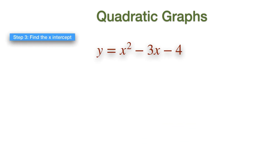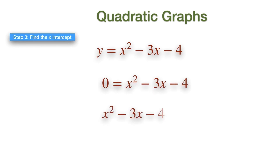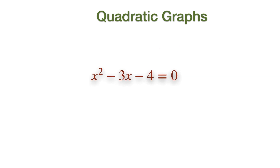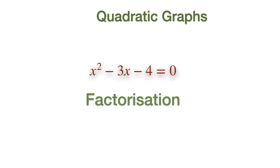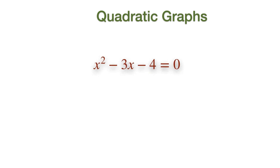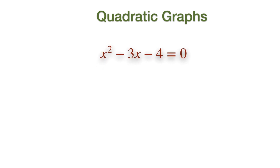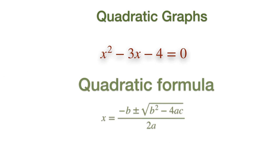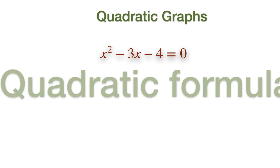In the third step, we have to find the X-intercept of the graph. X-intercept occurs when the Y-coordinate is zero, which means we are now solving a quadratic equation. There are a number of ways to solve this equation. One of the most popular ways is by factorization. The second method is the quadratic formula, which is the most popular method to use when factorization is unsuccessful.